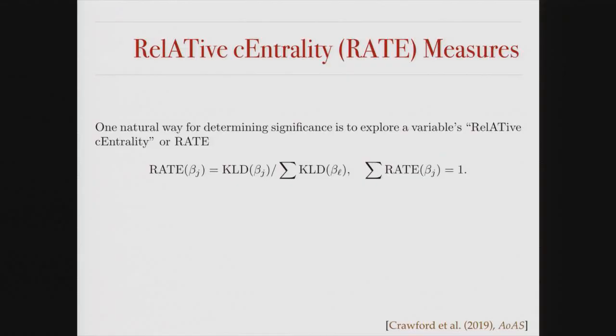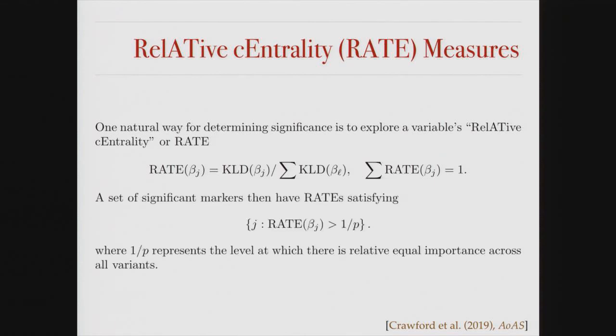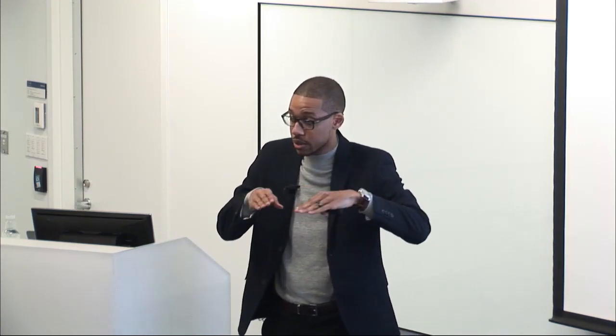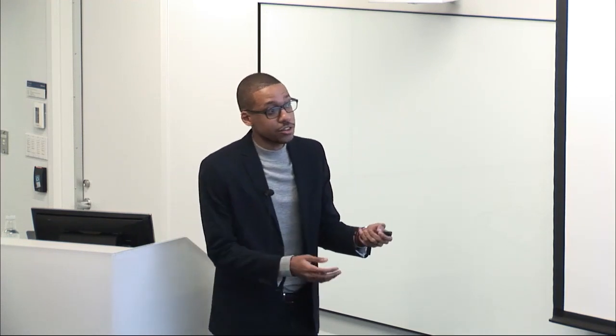Question: how is this different from just running something like an iterative test between standard classical approaches? There is a refitting process. As N gets large, that could be super costly to continue to refit. What we do in our methods is scale. We do this relative centrality, which gives us a significance measure kind of threshold — this idea that the relative centrality of important variables are going to be over 1/P, the number of predictors in my model. If everybody's about the same — a team of bench players — they're all going to contribute about the same amount of information.